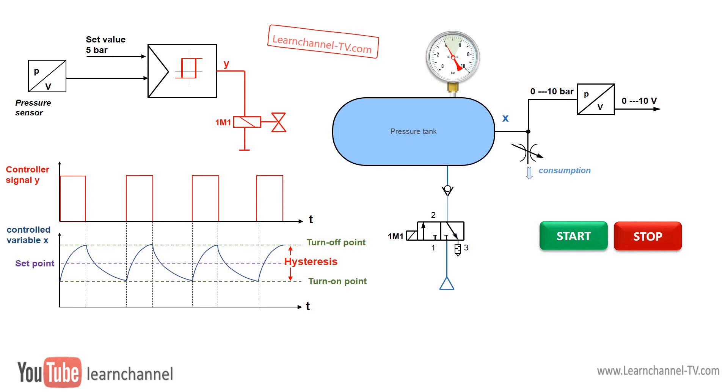Let's look at our example of the two-point pressure control and watch how it works. The pressure fluctuates between two switching points, a turn-off point and a turn-on point. The difference between the two switching points is referred to as hysteresis and is one parameter of the binary controller. Another parameter is the set point or desired value, which is located right between these switching points.